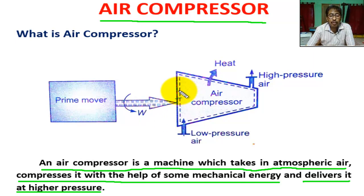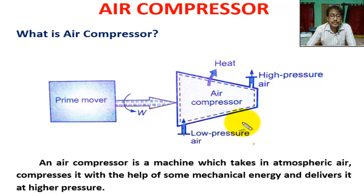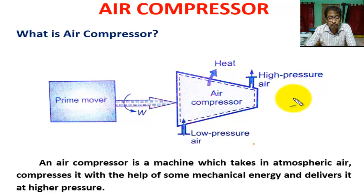What is a compressor? The function of a compressor is to take a definite quantity of fluid, usually gas, mostly air, and deliver it at a required pressure. An air compressor takes in atmospheric air, compresses it, and delivers the higher pressure air to a storage vessel. From the storage vessel or tank, the compressed air is supplied as per requirement through pipelines.